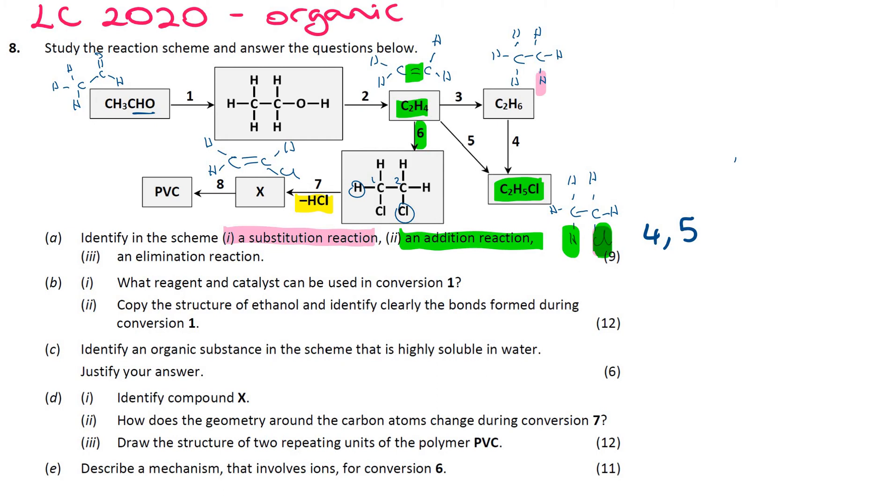Then you're asked to identify an elimination reaction. Well, I've already said, an elimination reaction is where you eliminate atoms from a molecule to make a smaller molecule. So, here actually, the elimination reaction is 7. So, that was 5 or 6, and then 7 for the elimination. Because we're eliminating HCl from that molecule to make the alkene there.